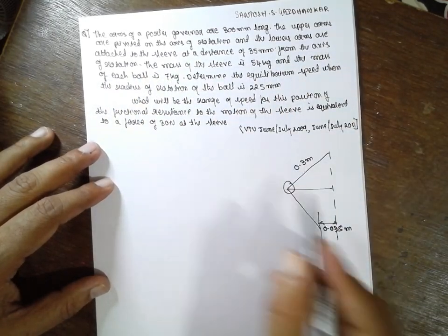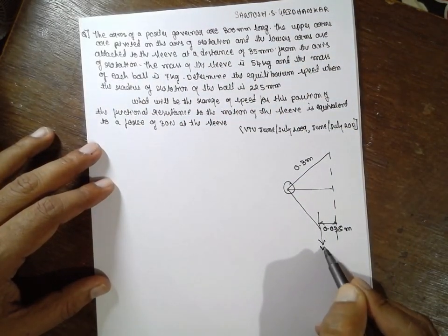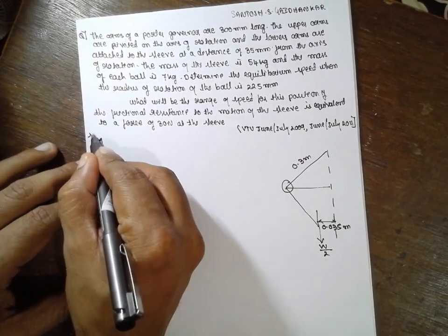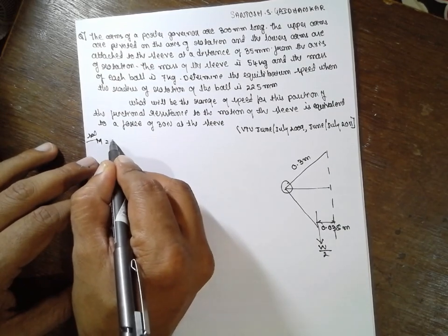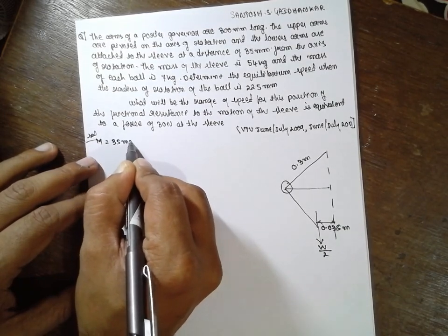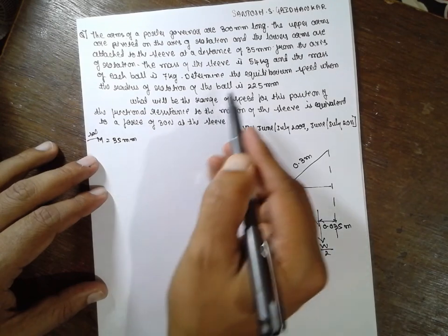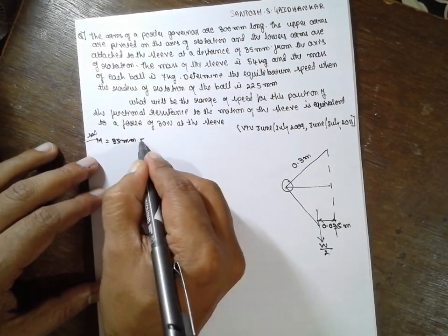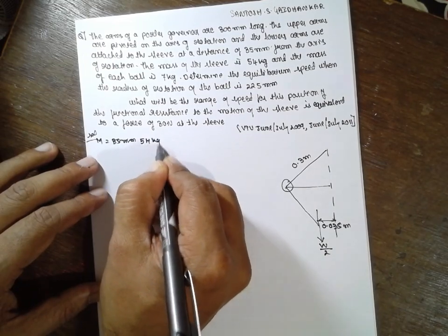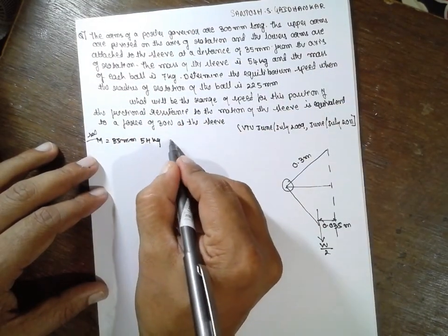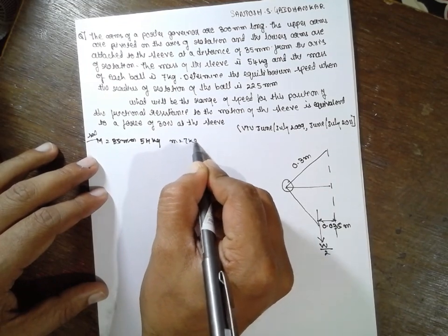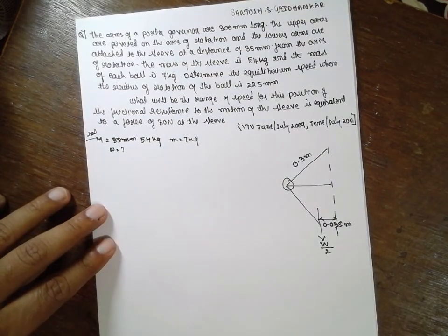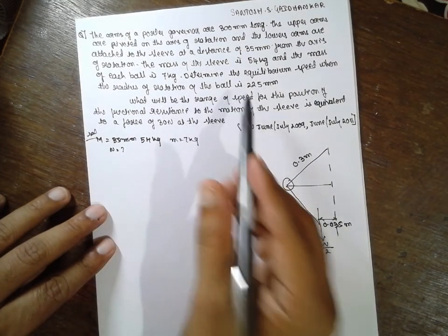The mass of the sleeve is given. Capital M is 54 kg. The mass of each ball, small m, is 7 kg. We have to determine the equilibrium speed N. The radius of the ball path R is 225 mm.